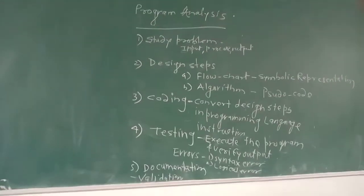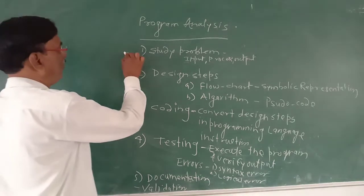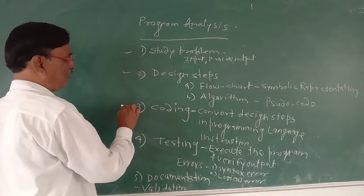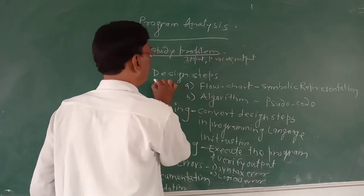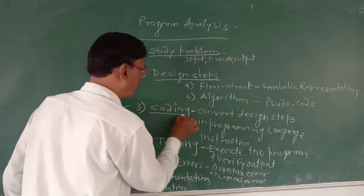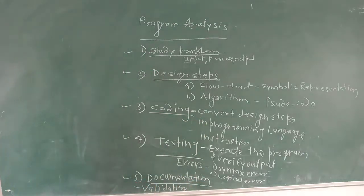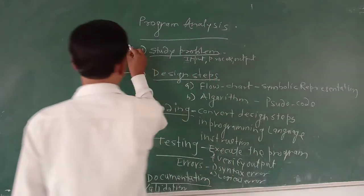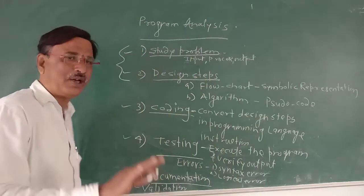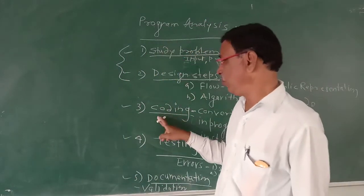So these are the five steps which we have seen in this chapter: studying the problem, design steps, coding, testing, and documentation. These are the five steps and all of them are important. These first two steps - studying the problem and design steps - do not require a computer system directly. This is paper work.